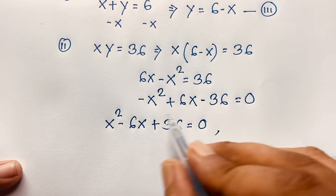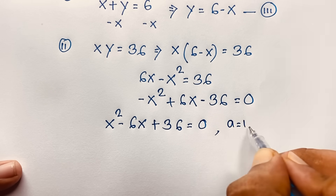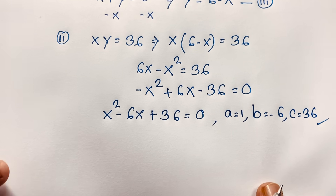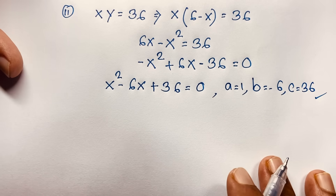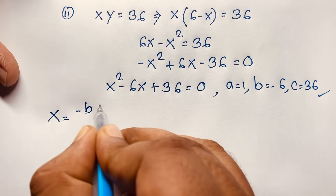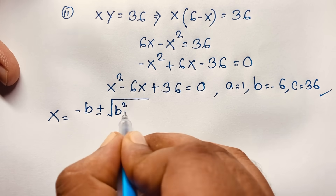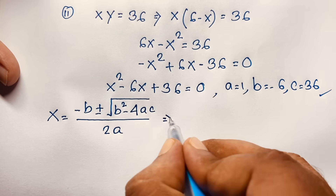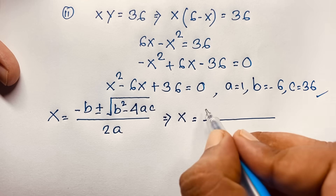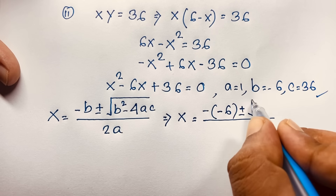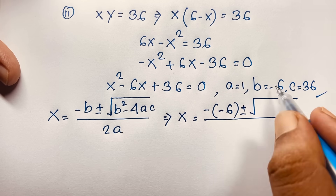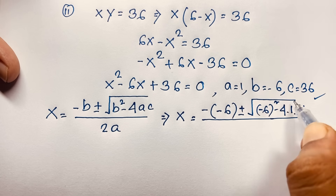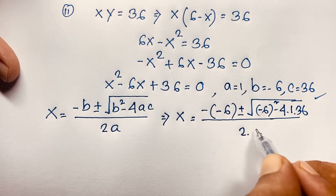Now if I multiply both sides by negative one, it will be x squared minus 6x plus 36 is equal to 0. This is a nice quadratic equation where a is equal to 1, b is equal to minus 6, and c is equal to 36. So now I use the quadratic formula: x equals negative b plus or minus square root of b squared minus 4ac, all over 2a.